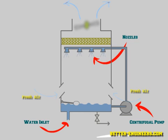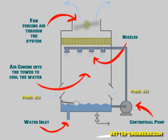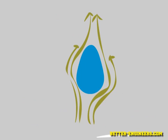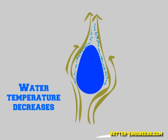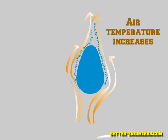At the same time, a fan, in this case located at the top of the tower, moves fresh air which comes into contact with the hot water. During this contact, part of the water will evaporate. As this evaporation needs energy, the temperature of the water decreases and that of the air increases.